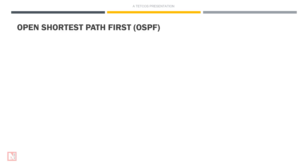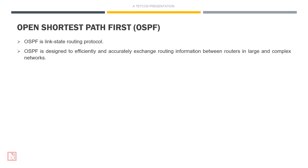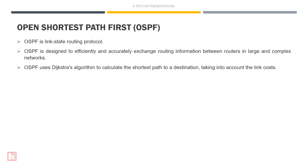Next let us look at OSPF. OSPF is a link state routing protocol designed to efficiently and accurately exchange routing information between routers in large and complex networks. OSPF uses Dijkstra's algorithm to calculate the shortest path to a destination, taking into account the link costs. The route formation of OSPF protocol includes 7 key steps that facilitate network convergence and path determination.